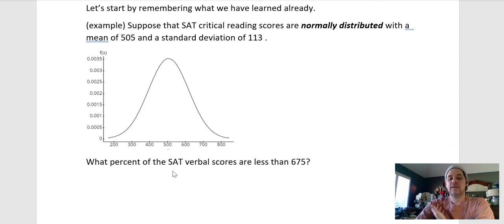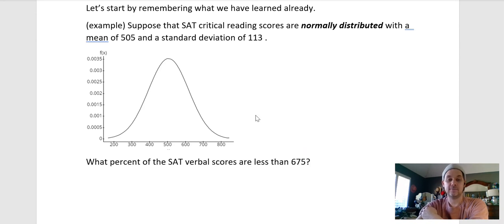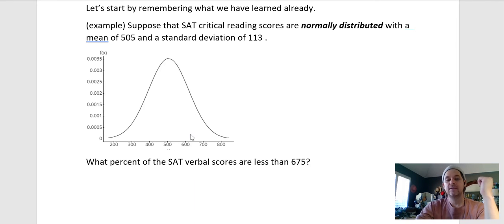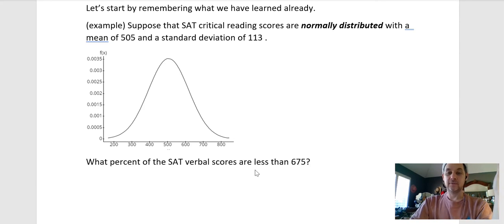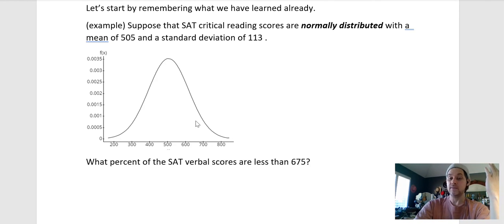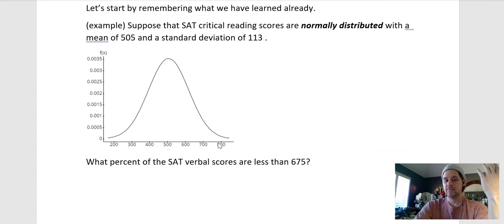So if I have the question 'what percent of SAT verbal scores are less than 675?', I can see where 675 is on the graph. If I find the area under the curve up to 675, that would be the percentage or the odds of a randomly chosen score being less than 675. It would be the percent of total scores less than 675, and if I chose a random person it would be the odds that their score was less than 675.